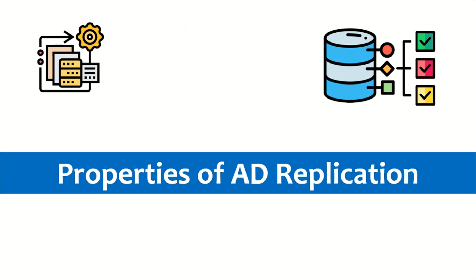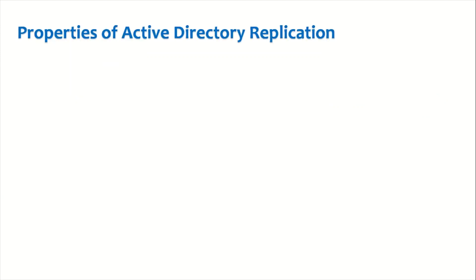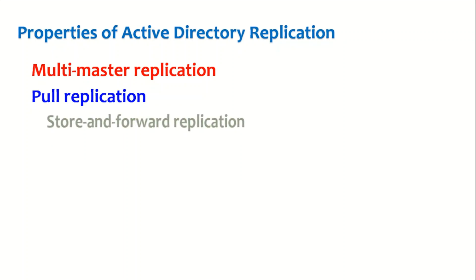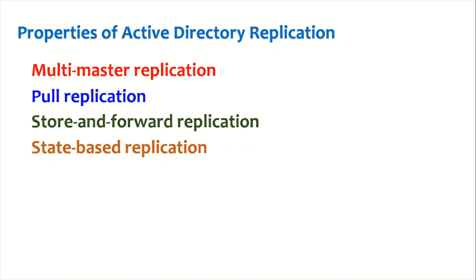Now let us understand the properties of active directory replication. There are four properties: it's a multi-master replication, active directory replication is always a pull replication, it's a store-and-forward replication, and it's a state-based replication. We'll dive into each property one by one.